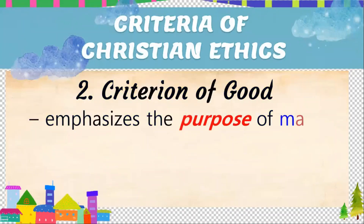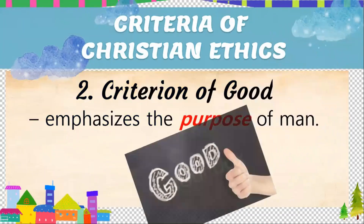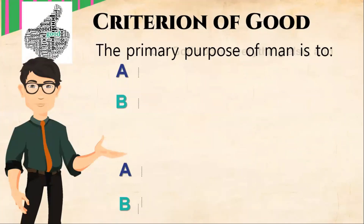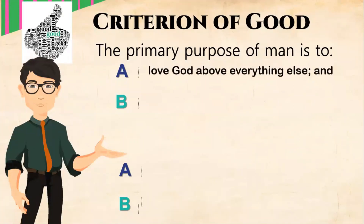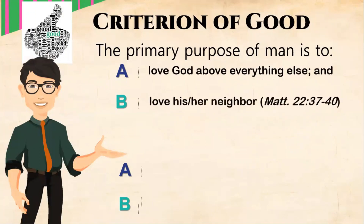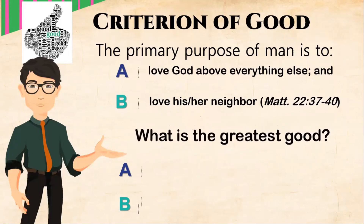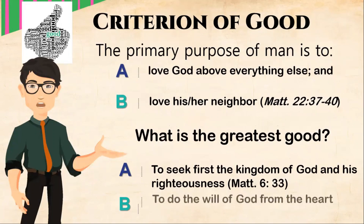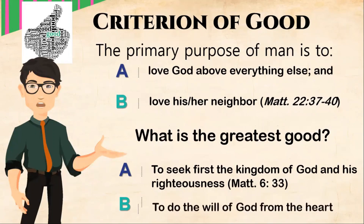The second one is known as the criterion of good. It emphasizes the purpose of man. What are the primary purposes of man? Firstly, to love God above everything else, and to love his or her neighbor, as found in Matthew 22, verses 37-40. We have discussed this also in our lesson about the five purposes of man. And what is the greatest good? To seek first the kingdom of God and his righteousness, as found in Matthew 6, verse 33, and to do the will of God from the heart.